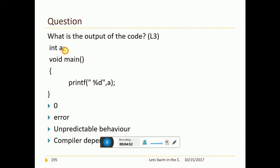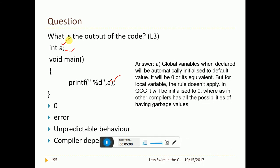Now, I have int a here, void main and print of percentage d a. So, what is it? It is again global. By default, global variables are initialized to 0. So, 0 is the answer.